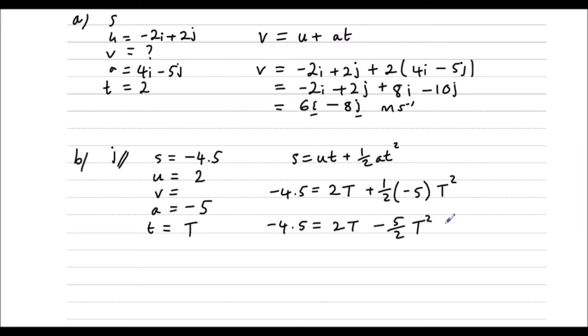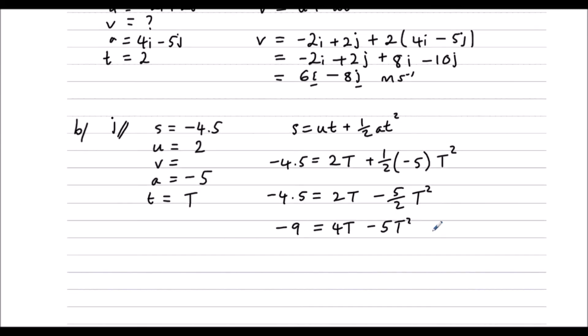We've got a quadratic. We're going to solve it by making it equal to 0. We could also double it to make the numbers nicer. So if I double this, minus 9 equals 4T minus 5T squared. And make it equal to 0. I'm going to bring everything over to the left side. So that would be 5T squared minus 4T minus 9 equals 0.